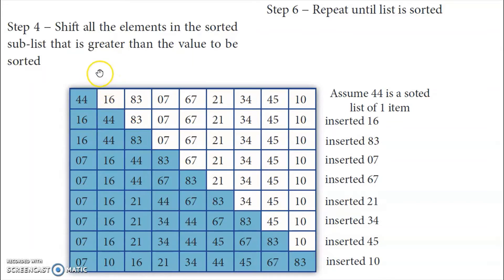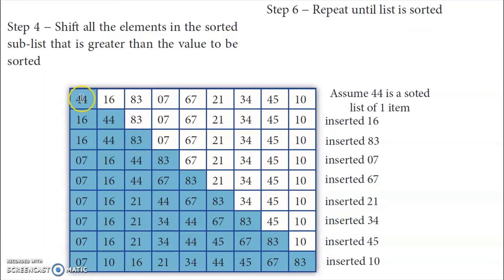When we insert one element at a position, all the elements in the sorted sublist that are greater than the value to be inserted will shift one place. So 16 is inserted, the greater element shifts one place. 16 will go to the first position and 44 gets shifted to the next position.